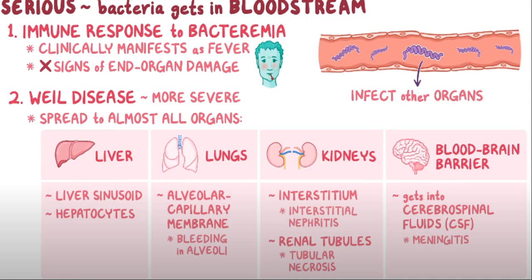It causes serious damage to the body. Bacteria get into the bloodstream and infect other organs. There are two phases: the first phase is immune response to the bacterium, and the second phase is the real disease. In the first phase, it manifests clinically as a fever with no sign of end-organ damage. The real disease is more severe and spreads to almost all organs including the liver, lungs, kidney, and blood-brain barrier.